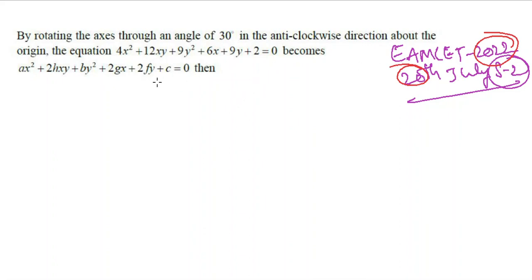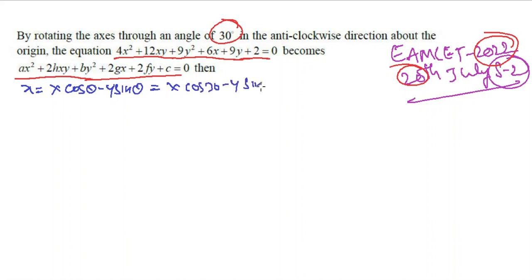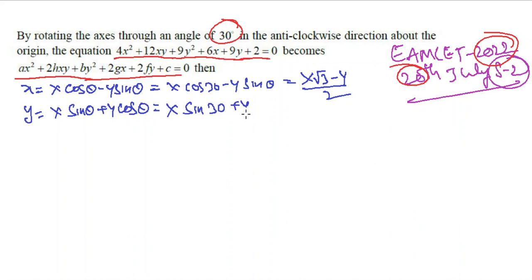Problem: rotating axes through 30° anticlockwise, the equation 4x² + 12xy + 9y² + 6x + 9y + 2 = 0 becomes Ax² + 2hxy + by² + 2gx + 2fy + c = 0. Find g/f. Using rotation formulas: x = X cos30° − Y sin30° = (√3X − Y)/2, and y = X sin30° + Y cos30° = (X + √3Y)/2.